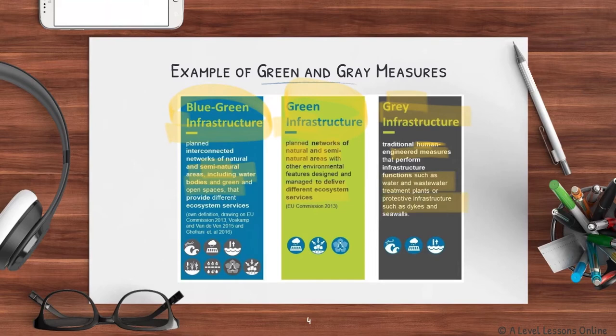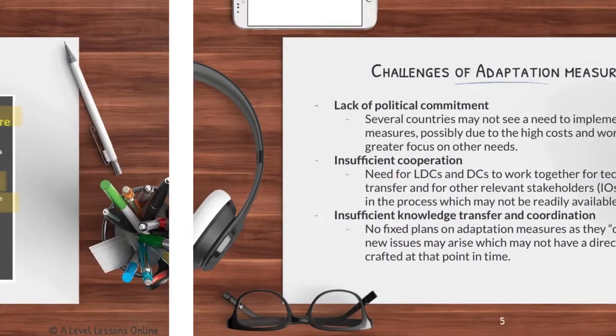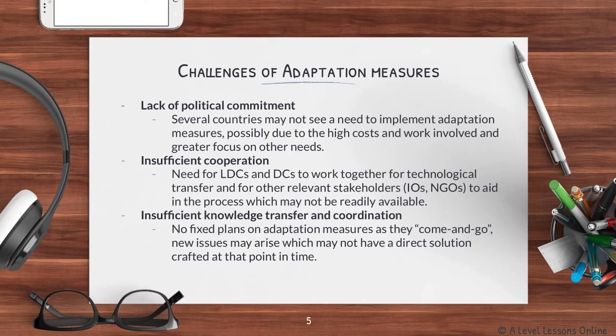Gray infrastructure refers to traditional human-engineered measures — human-based strategies that perform infrastructure functions such as water and wastewater treatment plants, or protective infrastructure such as dikes and sea walls. Together, blue-green, green, and gray measures target different types of areas covered by nature as well as human infrastructure, incorporating cleaner and greener solutions to help adapt to the effects of climate change.